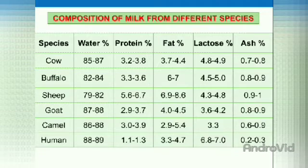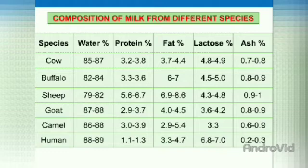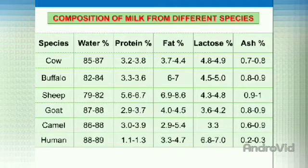Then the third species is sheep. In sheep's milk, the water percentage is low compared to any other species — only 79 to 82%. Protein is 5.6 to 6.7%, fat 6.9 to 8.6%, lactose 4.3 to 4.8%, and ash 0.9 to 1%. In sheep's milk, the fat percentage and the ash percentage are both high compared to any other species.